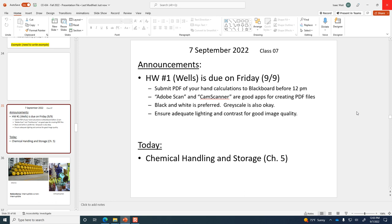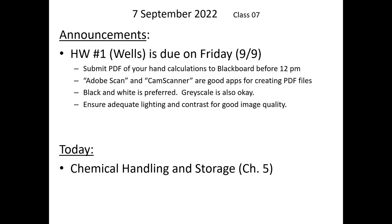Just a brief announcement about the grade book. You can log on to Blackboard right now and see your weighted average in the course, but there hasn't been much submitted so far. We've got that one quiz and your attendance grade, so you're going to see quite a lot of variability early in the semester. I don't think you should worry too much about what your grade says at this point because it's not really representative of the bulk of the point categories described on the syllabus.